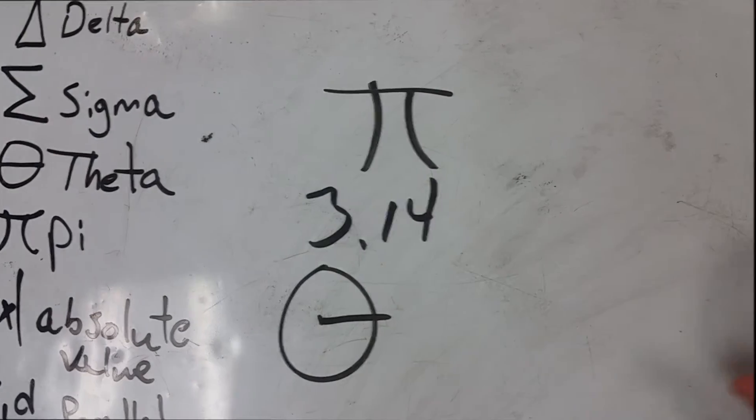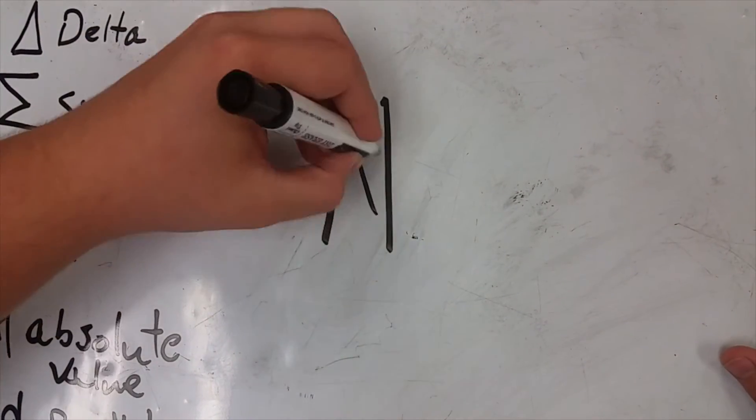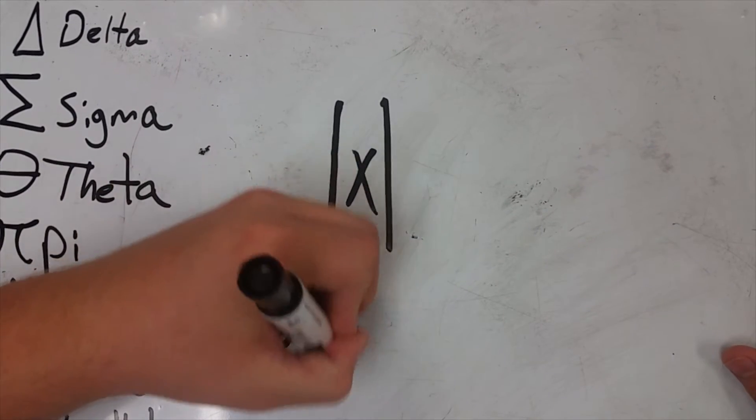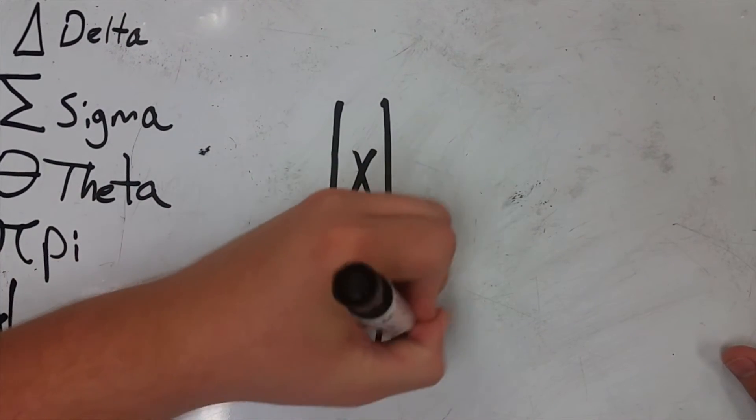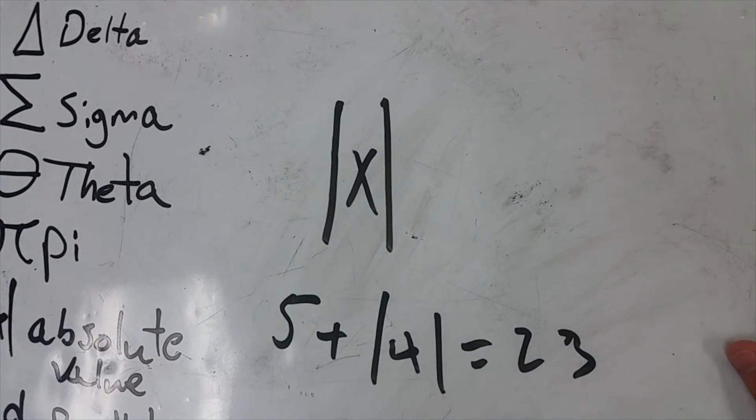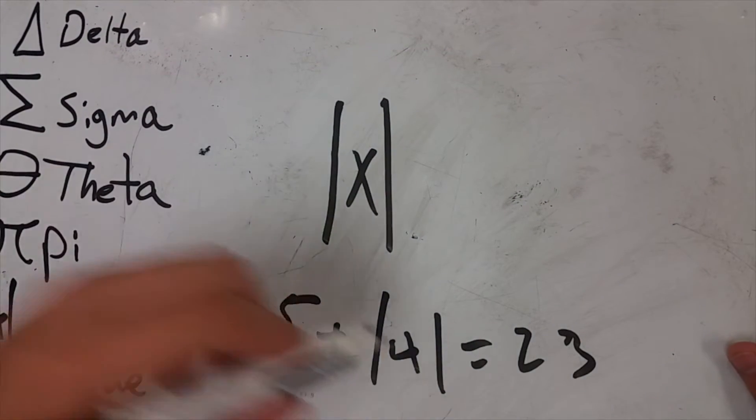and things like that. The symbol is absolute value. Absolute value is found in an equation that says like 5 plus the absolute value of 4 equals 23. Now there will be another video to show you how to solve an equation like this. But when you see absolute value, that's what that stands for.